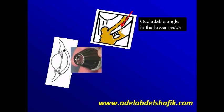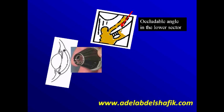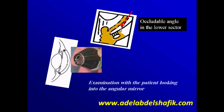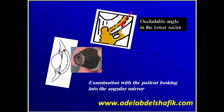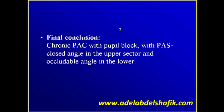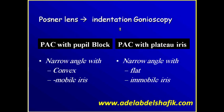This is much easier to do with the one-mirror Goldman rather than with the Posner lens, because the one-mirror Goldman keeps the eye steady and you can see a better image, while with the Posner the eye of the patient is free to move and visibility will be difficult. This is the case when you ask the patient to look toward the mirror. Keep in mind that when you do indentation gonioscopy, check the most peripheral part of the iris — is it movable or not — to know if you are dealing with pupillary block or plateau iris.